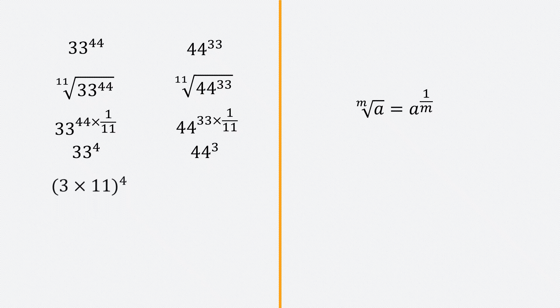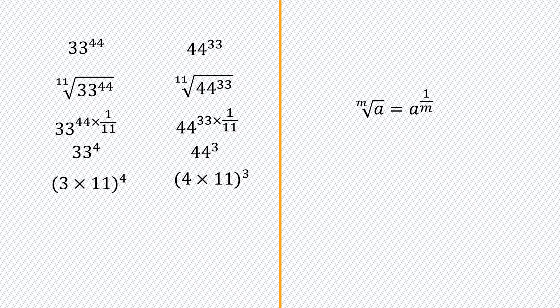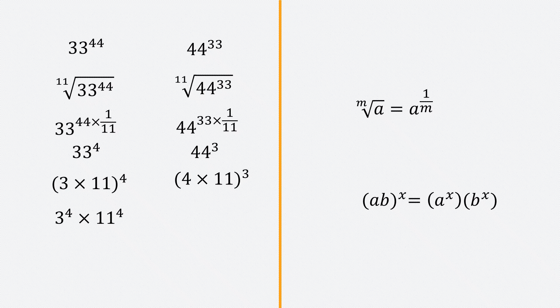So what we'll do is write 33 as 3 times 11, giving us 3 times 11 to the power 4, and 44 as 4 times 11, giving us 4 times 11 to the power 3. We can now distribute the powers over the product — if I have (ab) to the power x, I can write it as a to the power x times b to the power x. So we'll have 3 to the power 4 times 11 to the power 4 on one side, and 4 to the power 3 times 11 to the power 3 on the other side.